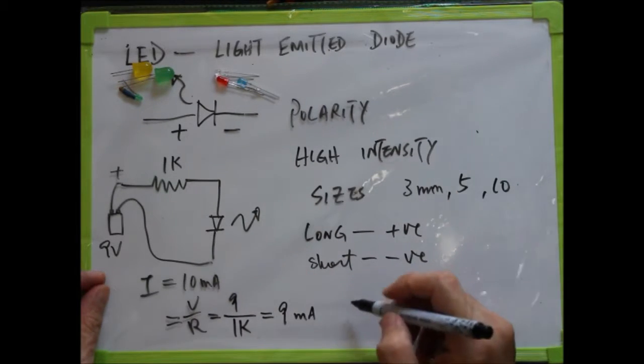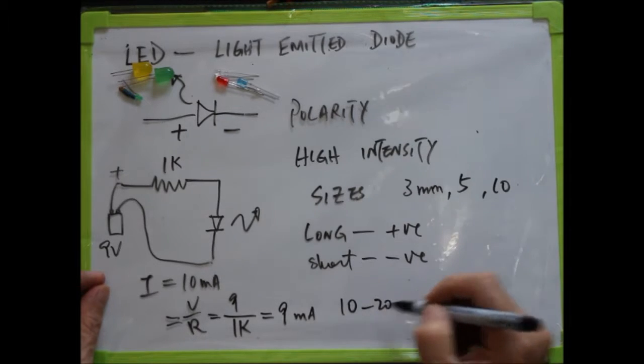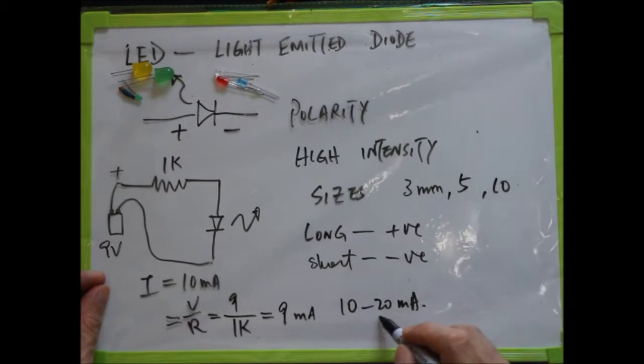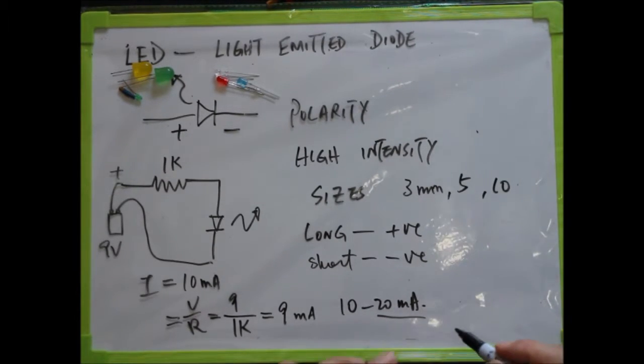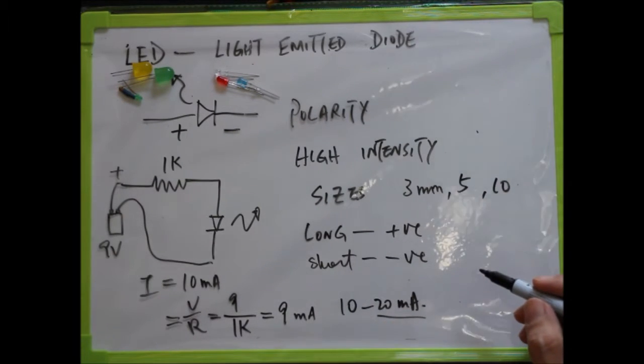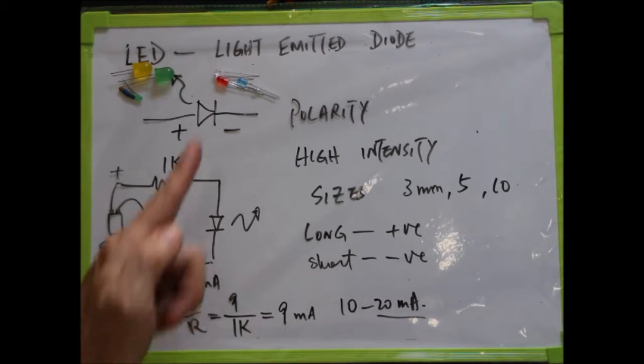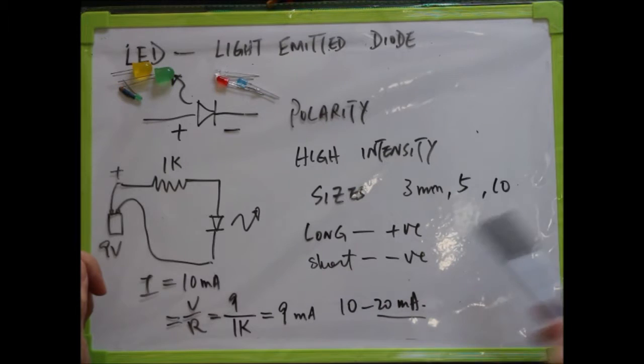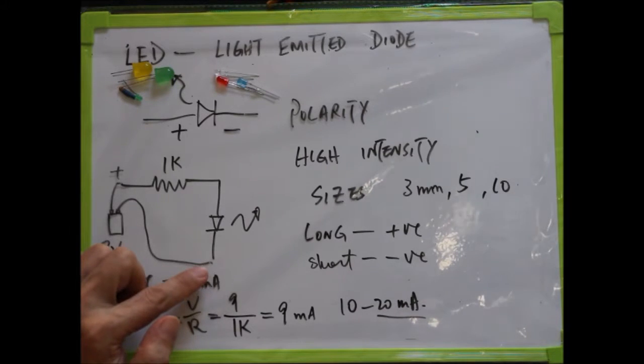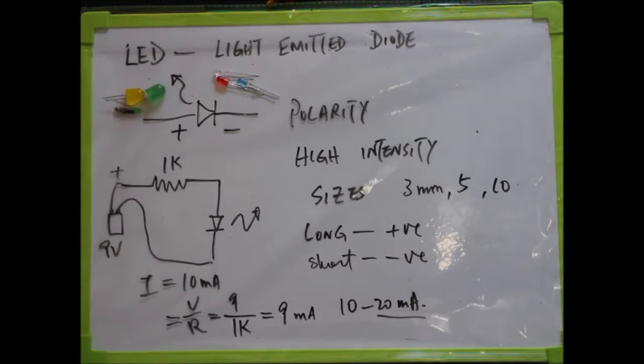Most of the time, LEDs work from 10 to 20mA. 20mA is the maximum—it will be very bright but will shorten the lifespan, so I don't expect you to use 20mA. You can also use the resistor to adjust the intensity. So this is what we talk about for LEDs.